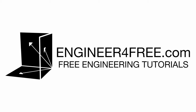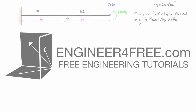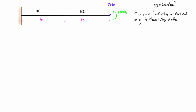Welcome back. In this video we are doing a moment area method problem with non-constant EI. We have the first half of this cantilever beam with 2EI and the second half with 1EI, where EI is equal to 20 times 10 to the 6 Newton meters squared. We want to find the slope and deflection at the free end using moment area methods.